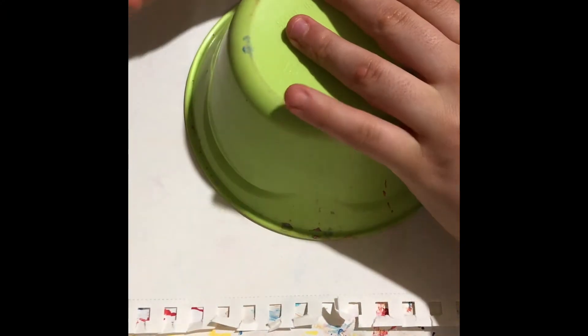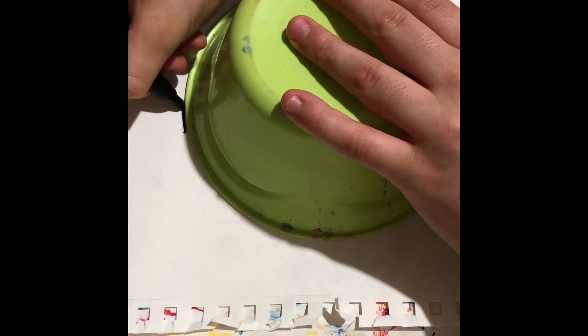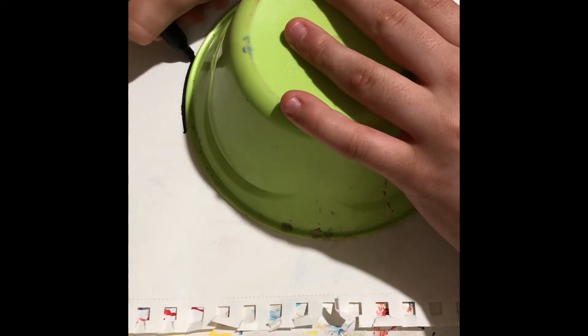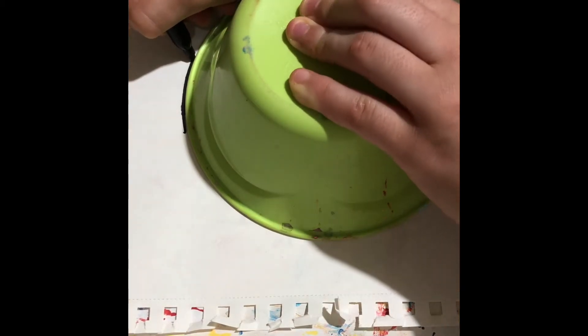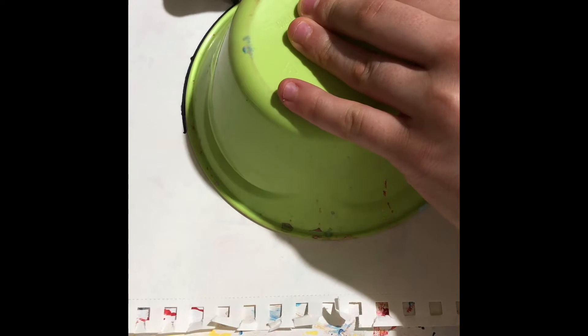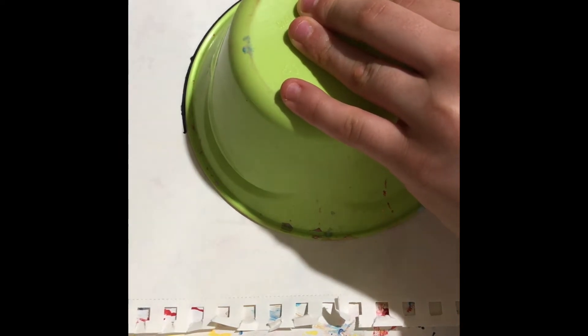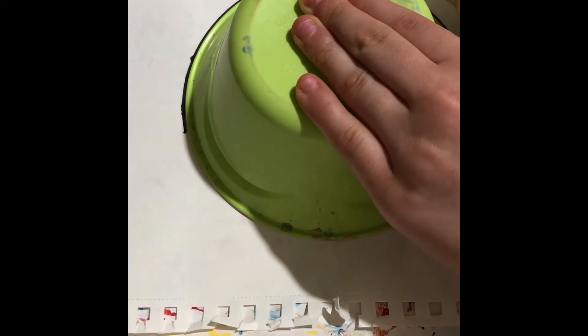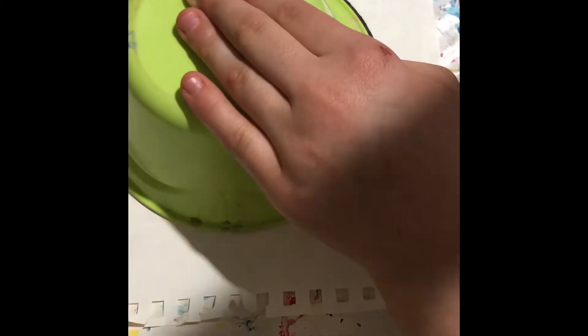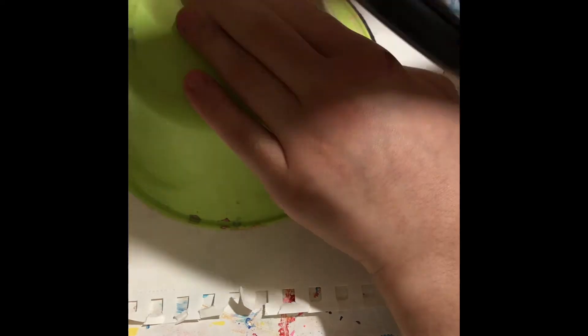All right guys, so make sure the bowl that you're using, it is okay for it to have sharpie on it because we're gonna be using it as a template to outline a perfect circle. So yeah, just to add that guys, in this clip I'm outlining the bowl to make a perfect circle for the emoji.